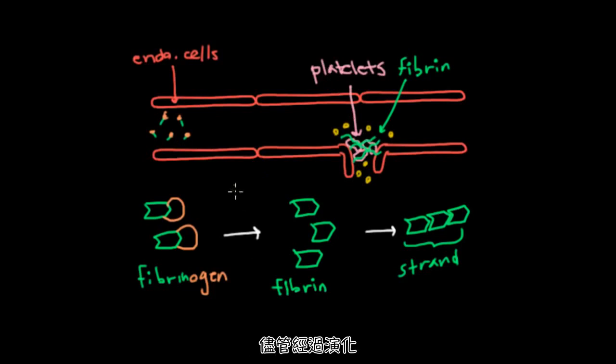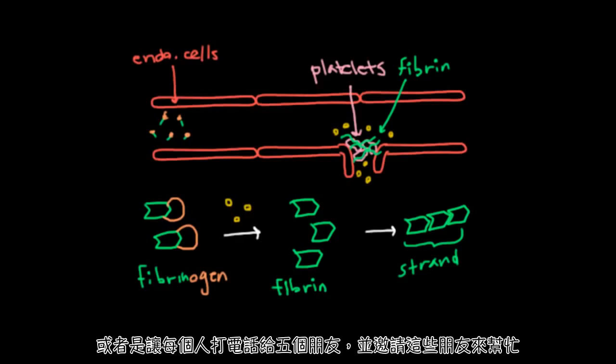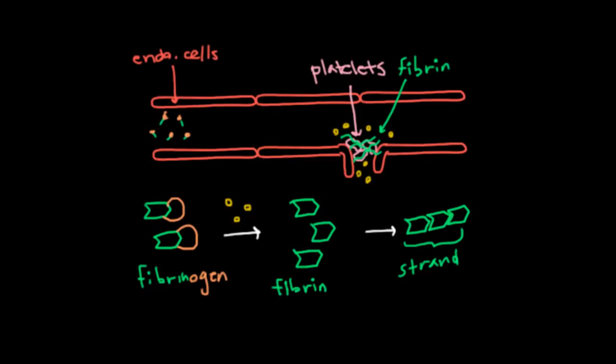So while evolution was designing us, it could have said, let's use these little yellow guys to convert fibrinogen to fibrin. And that might have worked, but it's actually not the most efficient way to do things. And the reason is, imagine if you and a couple of friends have a huge amount of work to do. Let's say you need to convert a million fibrinogen to fibrin. Is the best way to do it to actually sit down and crank it out? Or would it be more efficient to have each of you call five friends and invite those friends to come work and ask those friends each to call five friends and ask those friends to each call five friends? Well, obviously, that would get the job done much faster, assuming you had those friends.